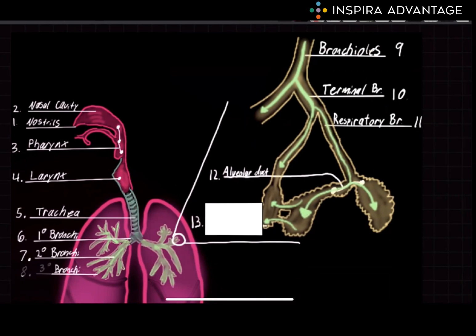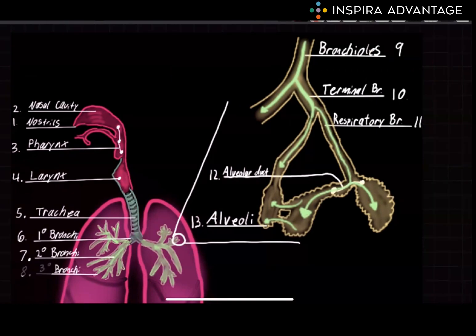The alveoli then, as we travel down the diagram with the green arrows until we get to number 13 here, alveoli are tiny air sacs located at the end of the bronchioles. They're surrounded by a network of tiny blood vessels called capillaries. The walls of the alveoli are thin, allowing for easy diffusion of gases. Oxygen can be inhaled into the alveoli and diffuses into the blood, while carbon dioxide moves from the blood and then is exhaled out of the body.